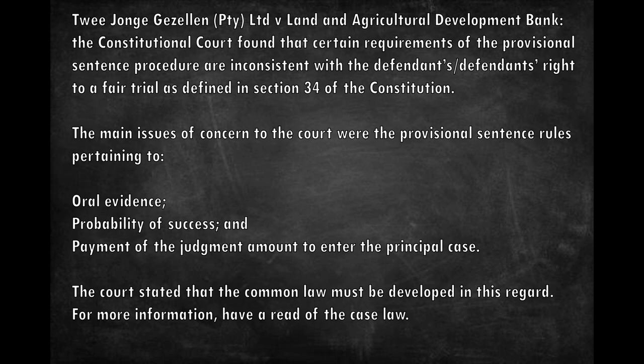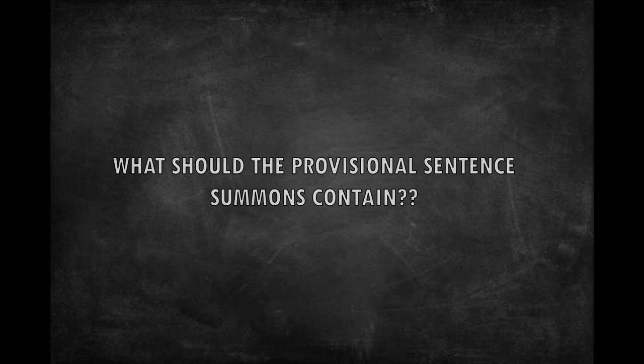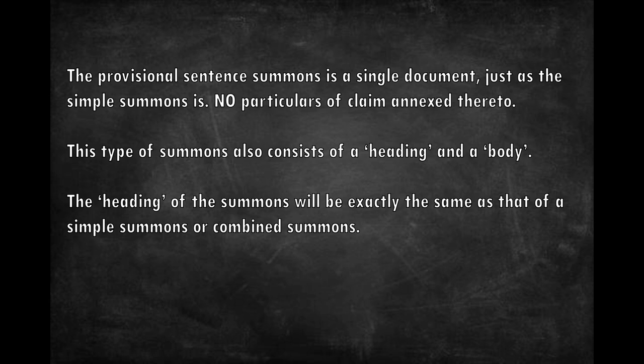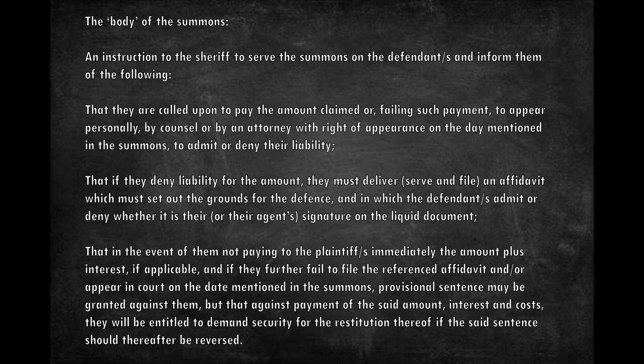What should a provisional sentence summons contain? The provisional sentence summons is a single document, just as the simple summons is — there is no particulars of claim annexed thereto. It consists of a heading and a body. The heading will be exactly the same as that of a simple or combined summons. The body must include an instruction to the sheriff to serve the summons on the defendant and inform them that they are called upon to pay the amount claimed, or failing such payment to appear personally — by counsel or by an attorney with rights of appearance — on the day mentioned in the summons to admit or deny their liability.